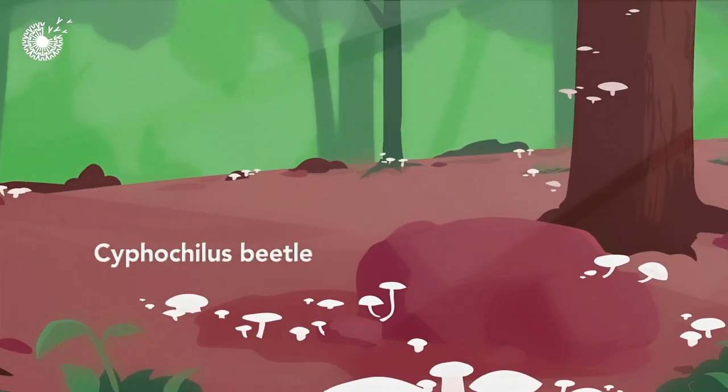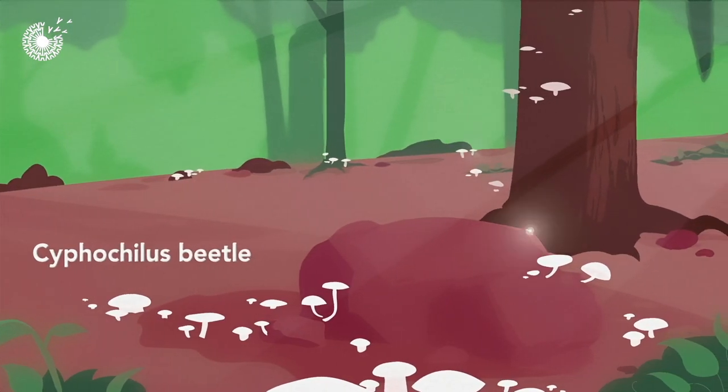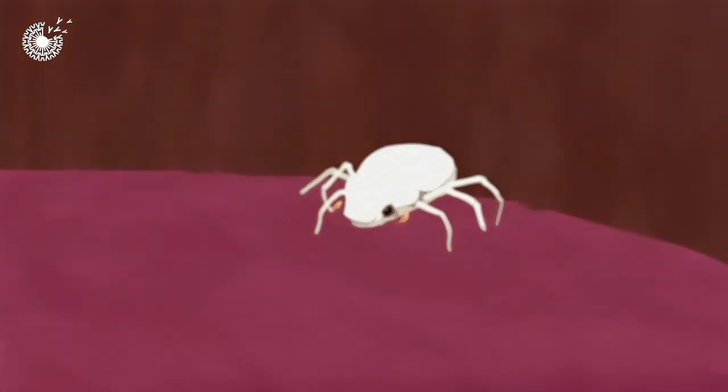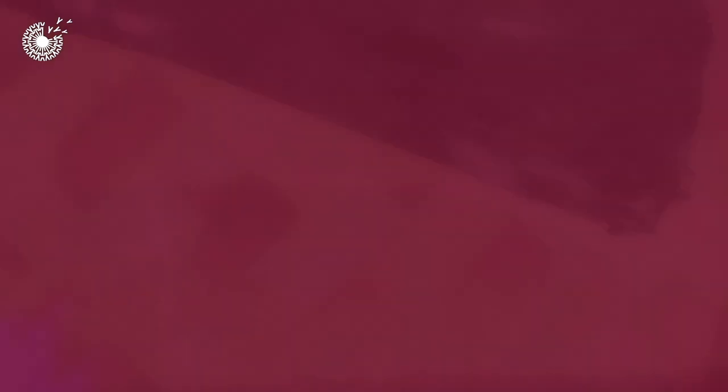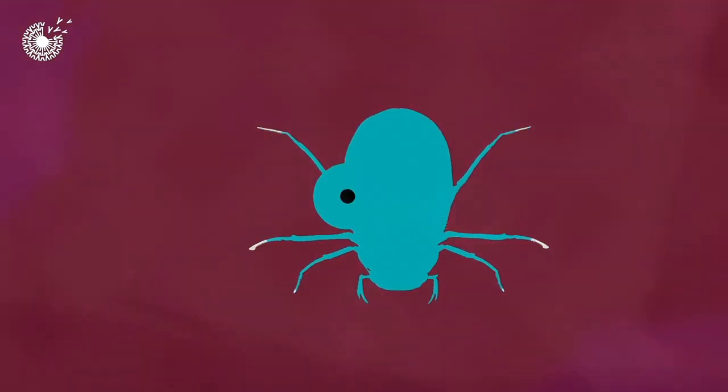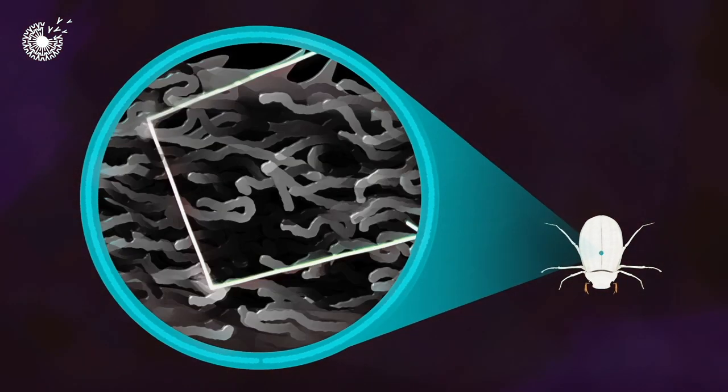The Sifocylis beetle makes its home on forest floors in the tropics of Southeast Asia. This remarkable little beetle has evolved an extraordinary network-like system in their exoskeleton that's one of the best light scatterers found in nature.